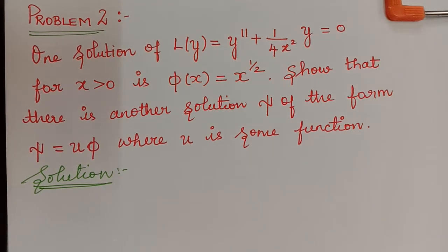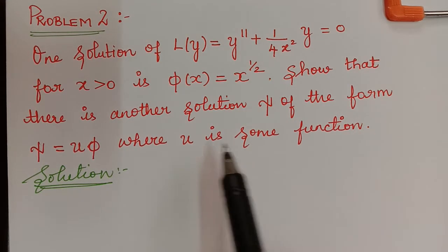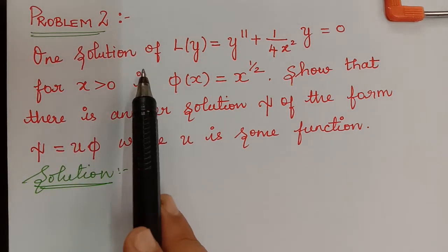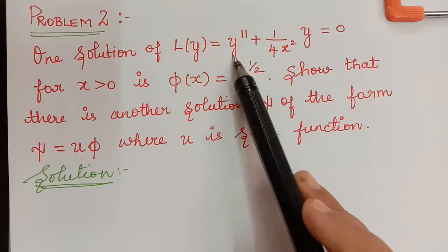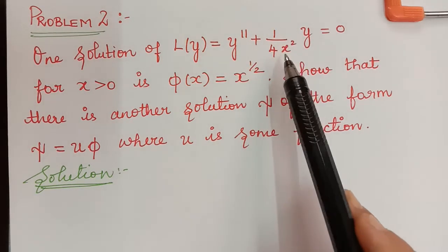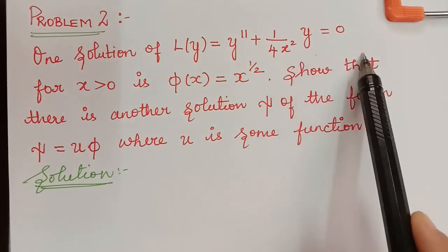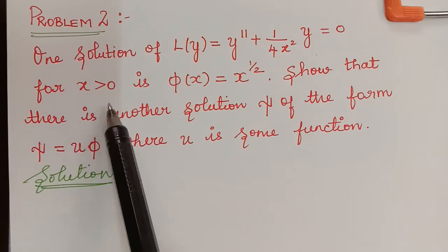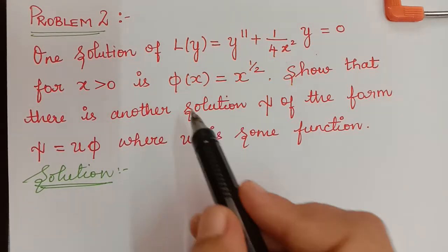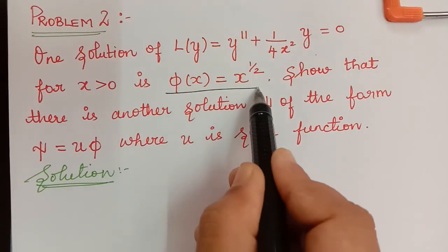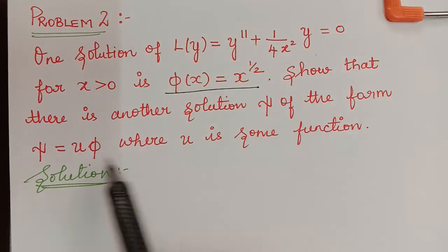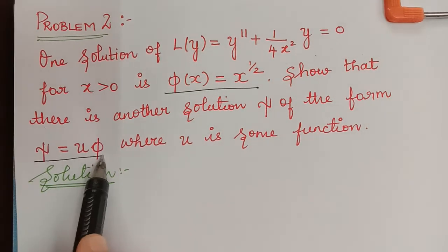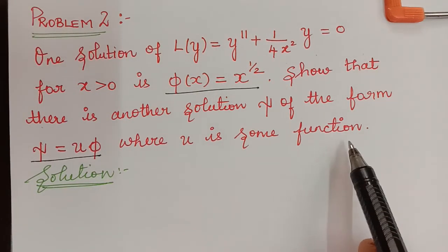Under the topic of linear equations with variable coefficients, here we have the second problem. One solution of L(y) = y'' + (1/4x²)y = 0 for x > 0 is φ(x) = x^(1/2). Show that there is another solution ξ of the form ξ = uφ, where u is some function.